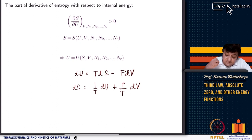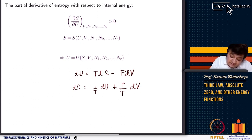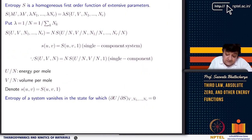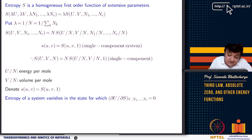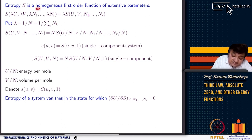Not only that, S is a monotonically increasing function of u: del S / del U must be greater than zero, keeping v and all species mole numbers constant. Also, since S is an extensive parameter and a function of other extensive parameters, you can think of S as a homogeneous first-order function of extensive parameters u, v, n₁, n₂, ..., n_r.